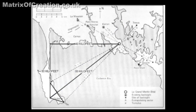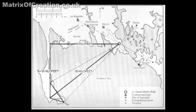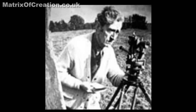These key understandings of the special latitude of Karnak started to emerge with Alexander Thom, who surveyed the monument in the early 1970s and who spotted the relevance of the 3-4-5 geometry at Karnak for showing the solstitial sun.